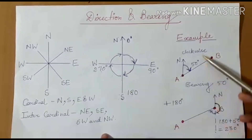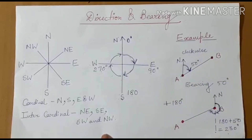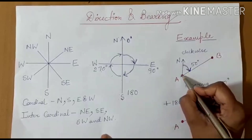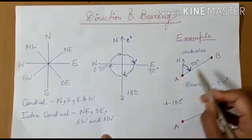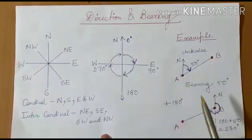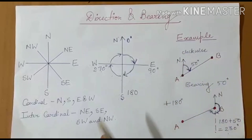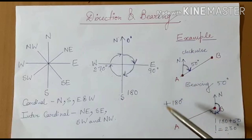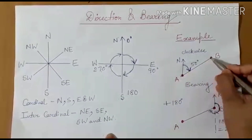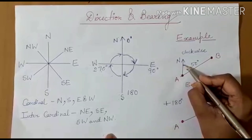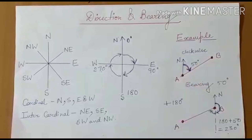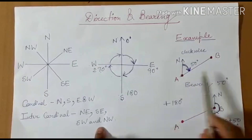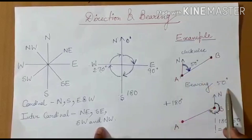We will revisit an example from the previous module for better understanding. This is station A and B. We have to find the bearing of B from A. We draw the north line along station A and join A and B. Moving clockwise from the north line, we get an angle of 50 degrees. So the bearing of B from A is 50 degrees.